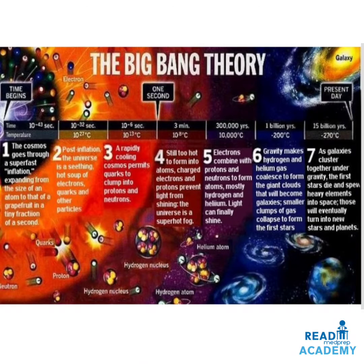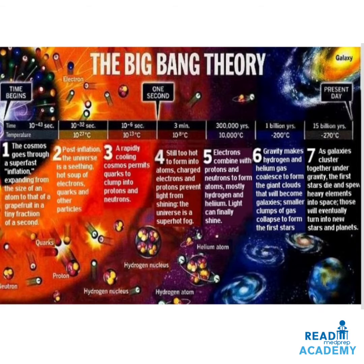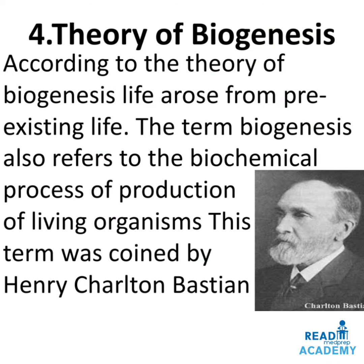The sixth event occurred at about 1 billion years ago at a temperature of 200 degrees centigrade, where gravity makes hydrogen and helium gas coalesce to form giant clouds that become galaxies, and smaller clumps of gas collapse to form the first stars. In 15 billion years at minus 270 degrees centigrade, the seventh event occurs as galaxies cluster together under gravity, the first stars die and spew heavy elements into space, which eventually turn into new stars and planets, bringing us to the present day.